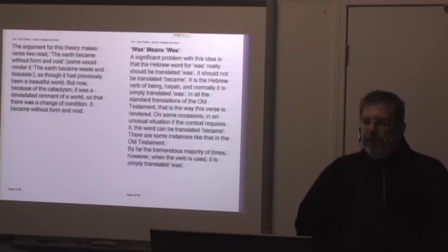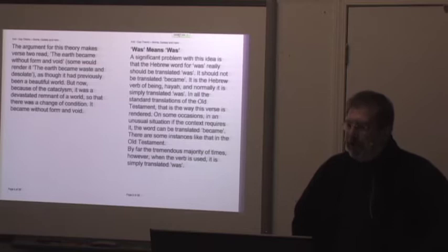The argument for this theory makes verse 2 read, The earth became without form and void. Some would render it the earth became waste and desolate, as though it had previously been a beautiful world. But now, because of the cataclysm, it was a devastated remnant of a world. This chapter is called Was Means Was. A significant problem with this idea is that the Hebrew word for was really should be translated was. It should not be translated became. It is the Hebrew verb of being, hayah, and normally it is simply translated was.